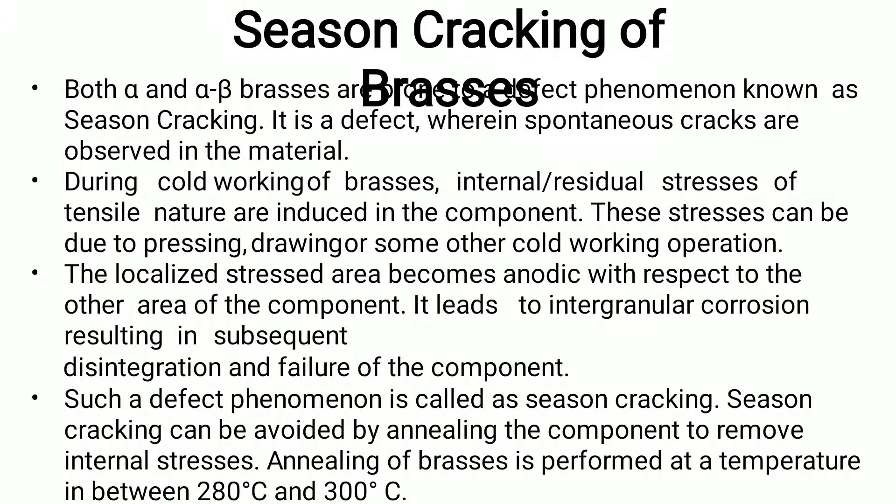Season cracking is a phenomenon to which both alpha and alpha-beta brasses are susceptible. It is a defect wherein spontaneous cracks are observed in the metal. During cold working of brasses, internal or residual tensile stresses are induced in the component due to pressing, drawing, or other cold working operations. The localized stress areas become anodic with respect to other areas, leading to intergranular corrosion and subsequent disintegration and failure. Season cracking can be avoided by annealing the component at 280 to 300°C to remove internal stresses.